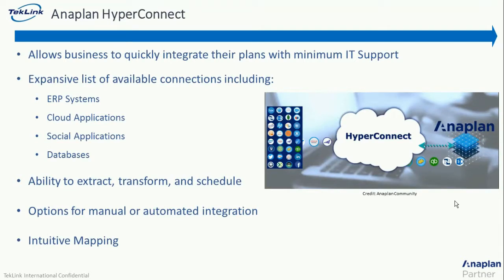Now we have Anaplan HyperConnect. HyperConnect is that version of Informatica Cloud that allows businesses to integrate Anaplan quickly with minimum IT support. It has a large list of connections available, including SAP, Salesforce, Facebook, LinkedIn, and Oracle or SQL. The main difference between Anaplan HyperConnect and Anaplan Connect is the mapping and scheduling. In HyperConnect, they're done in a front-end user interface that is simple to use, and it can create intuitive mapping where data fields are automated to map based on the sources. While in Anaplan Connect, it is done through file sharing through directories.